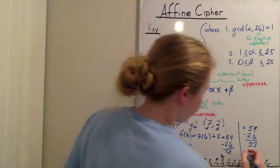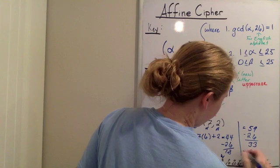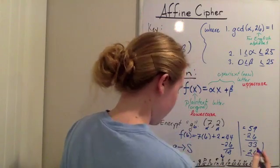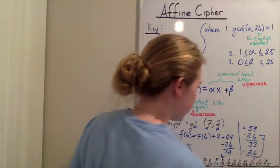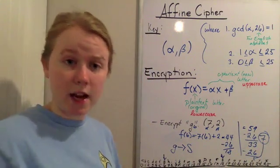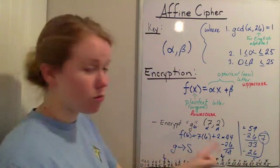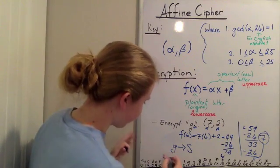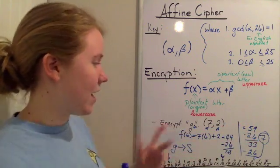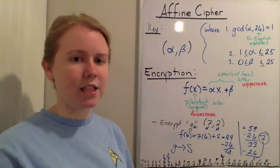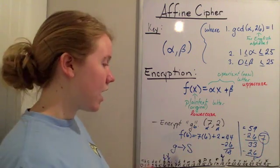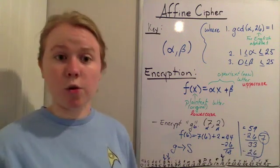33 minus 26 is 7, so we get down to a number 7, and then we go, does that have a number, or excuse me, a letter that goes with it? We look, yes, h right there goes with 7. So if we ended up with 59, that would be an h. So you just keep subtracting the modulus, or the number of characters you have, or you're using, until you get something that actually does correlate with a letter.